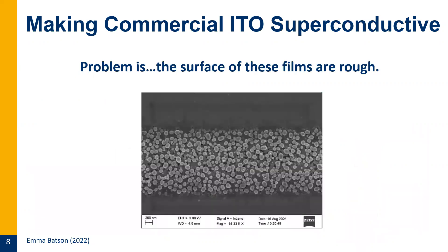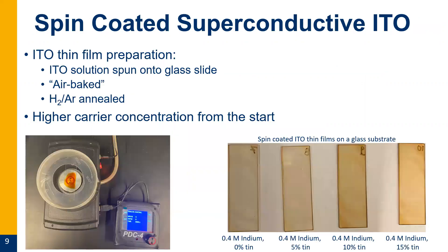One problem is that the surface is incredibly rough, likely due to the forceful introduction of new charge carriers. All those defects rise to the surface, leaving a terrible nanoparticle layer. If we're using these materials for an optical circuit, that will introduce a lot of scatter — not ideal. So my work involves developing a spin-coating method for creating these superconductive ITO thin films.